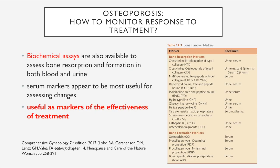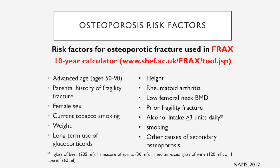To monitor response to treatment of osteoporosis, biochemical assays are available to assess bone resorption and formation in both blood and urine. Serum markers or bone turnover markers are most useful for assessing changes and for evaluating the effectiveness of treatment. Risk factors for osteoporosis as listed in the FRAX 10-year calculator include advanced age (50 to 90), parental history of fragility fracture, female gender, current tobacco smoking, low weight, long-term glucocorticoid use, short height, rheumatoid arthritis, low femoral neck BMD, prior fragility fracture, alcohol intake of at least 3 units daily, and other causes of secondary osteoporosis.